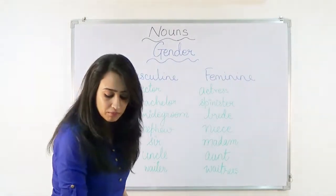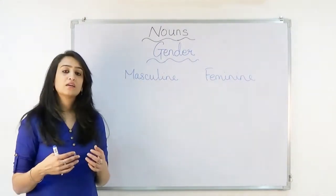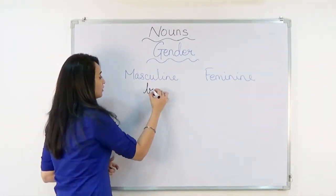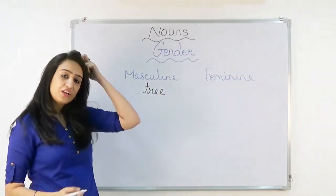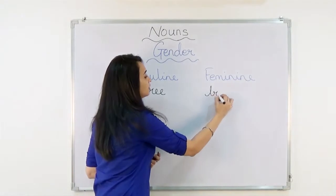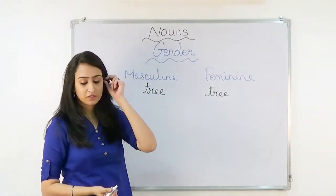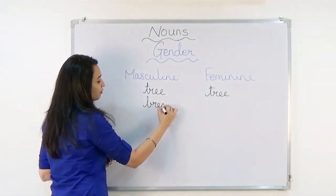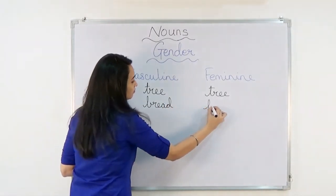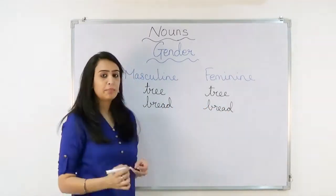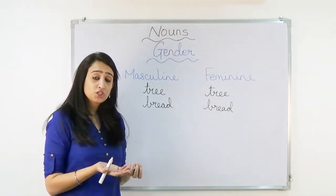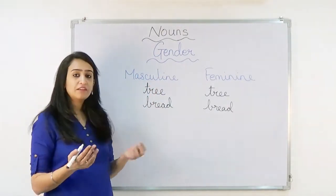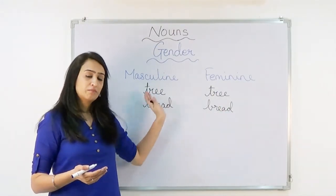There are some things that are non-living — for example, tree, bread, butter, church, temple. Anything that is non-living will not have a feminine or a masculine name; it remains neutral.